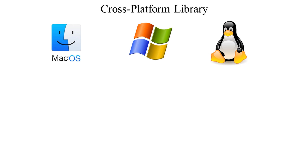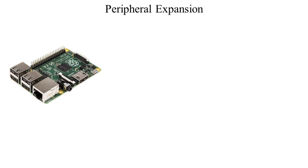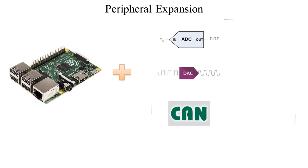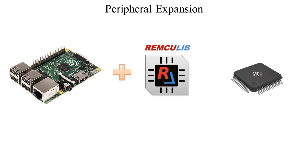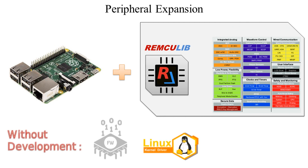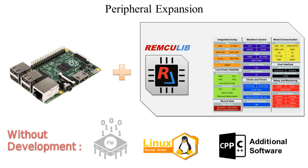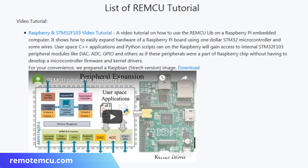The RemQ library is a cross-platform library, and it works on all of the most common desktop operating systems. It can also be ported to embedded systems. Very often, embedded platforms have a limited number of peripherals, which is commonly expanded using external MCU or SOC. But the RemQ library makes it possible to easily expand the limited number of peripherals of an embedded computer, without having to develop firmware, kernel drivers, and other additional software. Our website has a video tutorial on using RemQ-Lib on the Raspberry Pi board, with some examples.